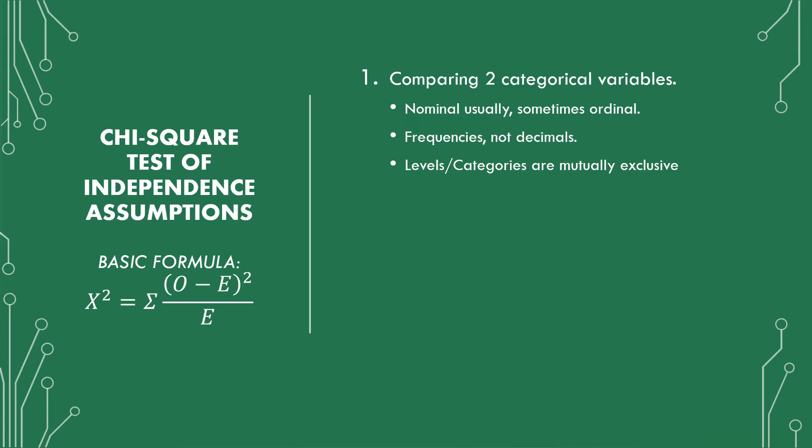You're looking to see if this variable is independent or not independent of this variable based off the counts and their different categories. The last part of this assumption is to look at the levels or categories and make sure that they're mutually exclusive. An example would be: are you vaccinated or not vaccinated? Do you have the disease or not? Things where there's no nesting, no association beyond one — it's simply, in a lot of cases, a yes-no question or a have or have not.